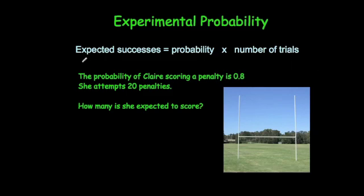So, let's have a look at how many times you expect something to happen. If you're asked how many times you expect something to happen, you would use probability times by the number of trials. So here's an example, the probability of Claire scoring a penalty is equal to 0.8. If she attempts 20 penalties, how many do you expect her to score? So it's probability, 0.8, multiplied by how many she attempts, the number of trials, so that's 20. 0.8 times 20 is 16. So we expect her to score 16 penalties and miss 4 penalties.